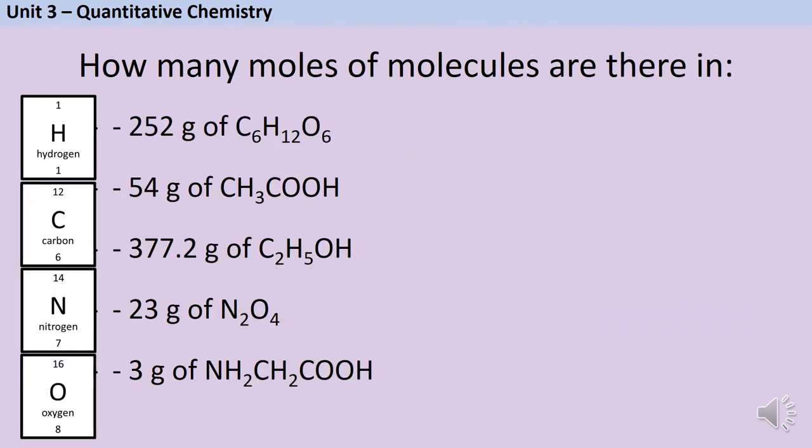We can use the same process with compounds too, but first you need to calculate the relative formula mass of each compound. So we start off with 252 grams of glucose. The mass of one mole of glucose—if I add up those six carbon atoms with a mass of 12, the 12 hydrogen atoms with a mass of one, and the six oxygen atoms with a mass of 16—is 180 grams per mole. Then I'm going to do mass divided by that Mr, so 252 divided by 180, and that gives me a total of 1.4 moles.